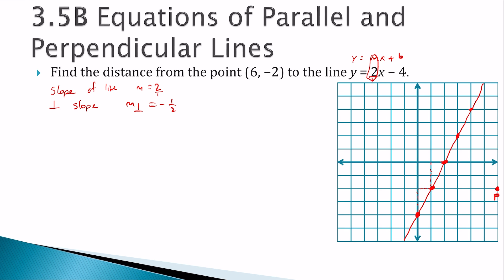Now, from there I could write the equation of this or maybe I could graph it. And let's see how that works. So I could go down 1 over 2 but that's off my graph. So I could go backwards. I could go up 1 and backwards 2. Up 1 and backwards 2. Up 1 and backwards 2. And conveniently, I went right into this point. So my point of intersection would be 2, 0 and my point P was 6, negative 2.